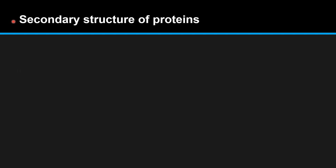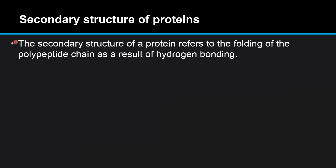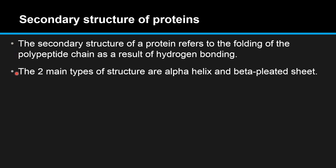Next we have the secondary structure of proteins. The secondary structure of a protein refers to the folding of the polypeptide chain as a result of hydrogen bonding. The two main types of structure are the alpha helix and the beta pleated sheet.